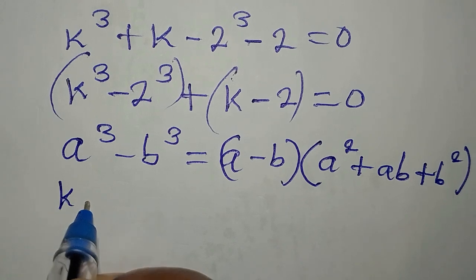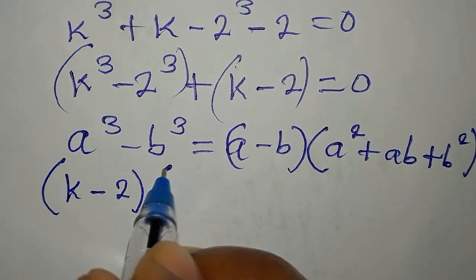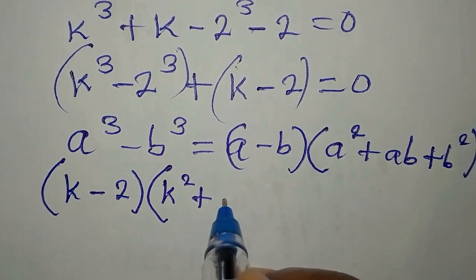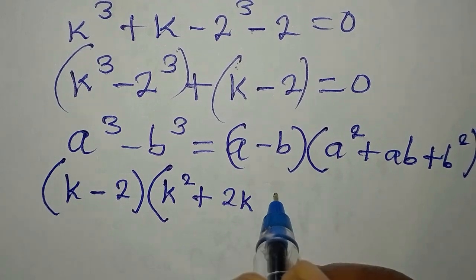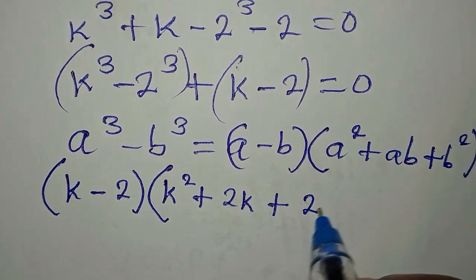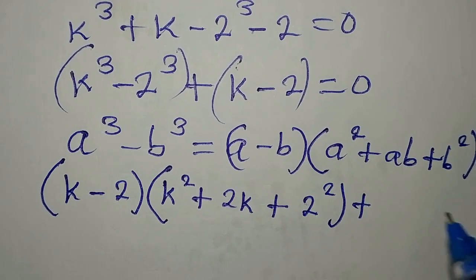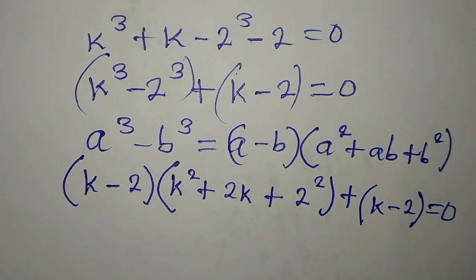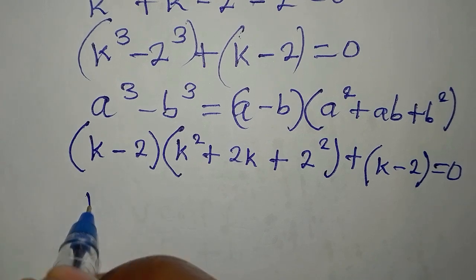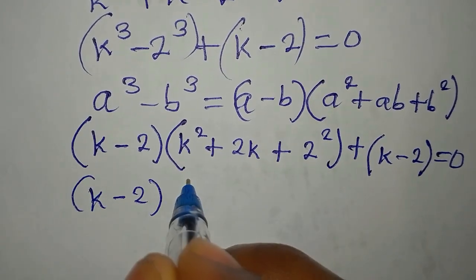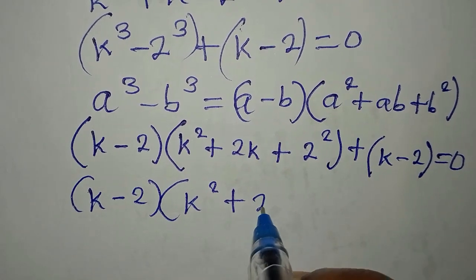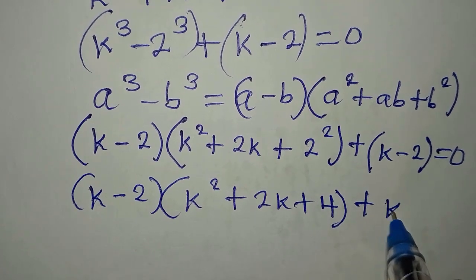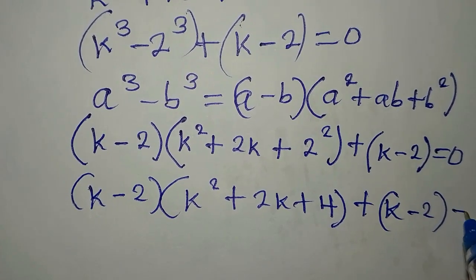Applying this formula: a minus b becomes k minus 2, then a squared is k squared, plus ab which is k times 2 giving 2k, then plus b squared which is 2 squared. Then we add the second group, which is plus open bracket k minus 2, and equate to zero. So we have k minus 2 times the bracket k squared plus 2k plus 4, plus k minus 2, equals zero.